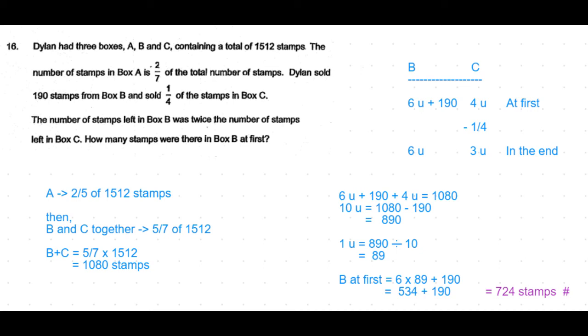We know that B at first is 6 units + 190. So 6 units = 6 × 89 = 534, plus 190, which equals 724 stamps.